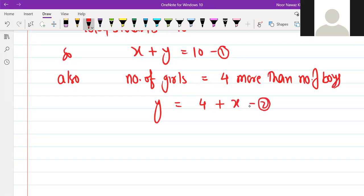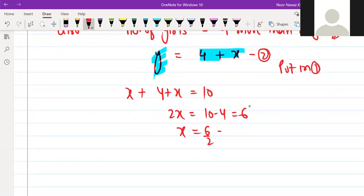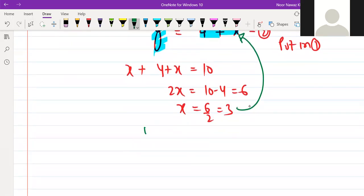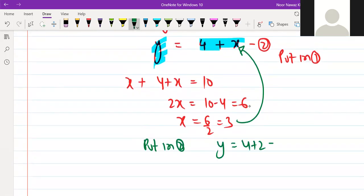That is my second equation. My first equation is x plus y is 10. My second equation is y equals four plus x. Substitute. Put in one. You will get x plus y, but y is four plus x, that equals 10. So x plus x is 2x. Four goes to right side, 10 minus 4 will be 6. x divided by 2, x will be 6 by 2 that is 3. Put in 2, y equals 4 plus 2 is 6.